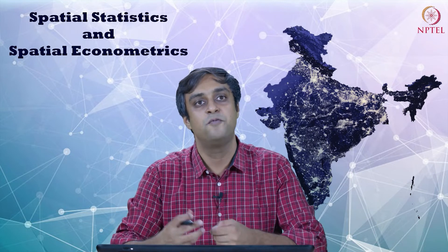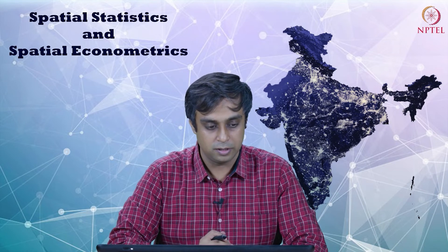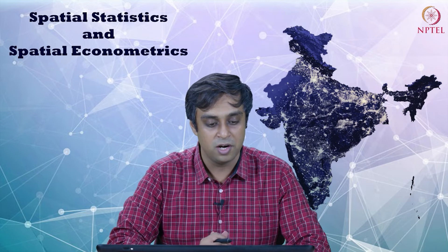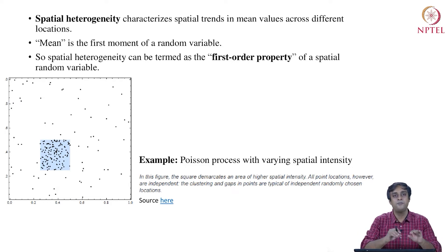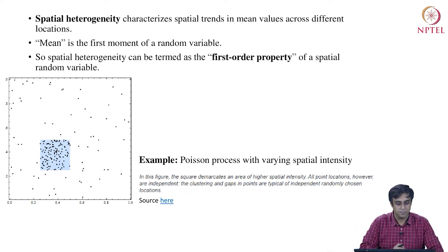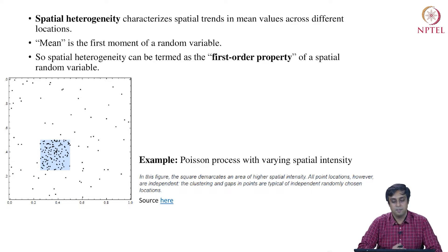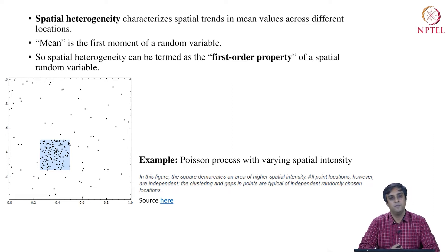Mean is the first moment of a random variable. We are viewing the world as if the events that are happening are random events — that is how statistics enters the domain of understanding happenings in the real world. Spatial heterogeneity describes how different the average intensity of events is across space. Since mean is the first moment of a random variable, spatial heterogeneity can be termed the first-order property of spatial random variables.